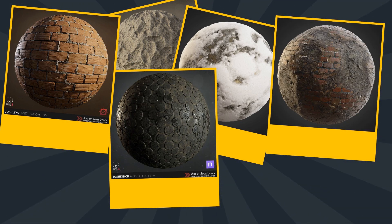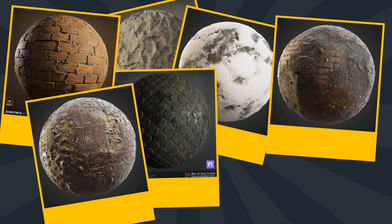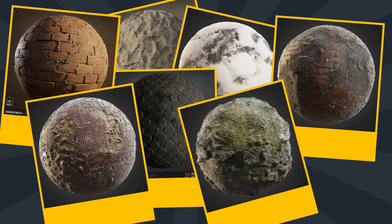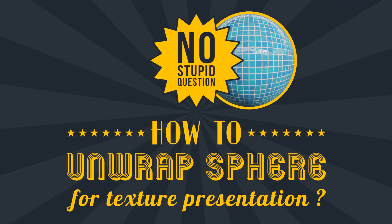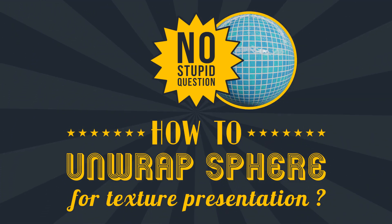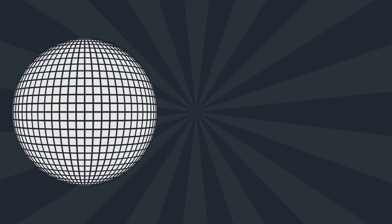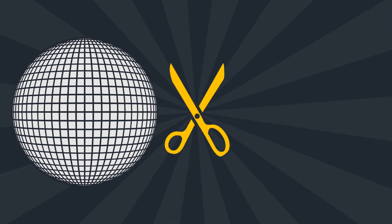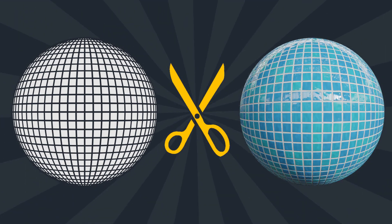Do you notice they are always shown on a sphere? But how do they apply the texture to their sphere like that? No stupid question — how to get grab spheres to make a texture preview? Indeed, to unwrap a sphere to show your own texture, it's not of use.